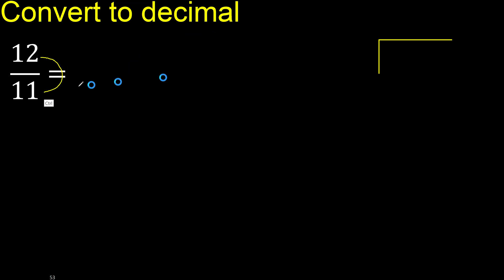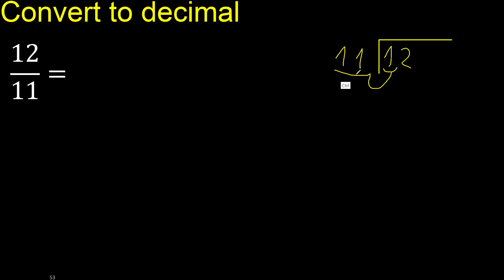12 divided by 11. 1 is less, therefore next. 12 is not less, therefore with 12: 11 multiplied by which number is nearest to 12 but not greater?